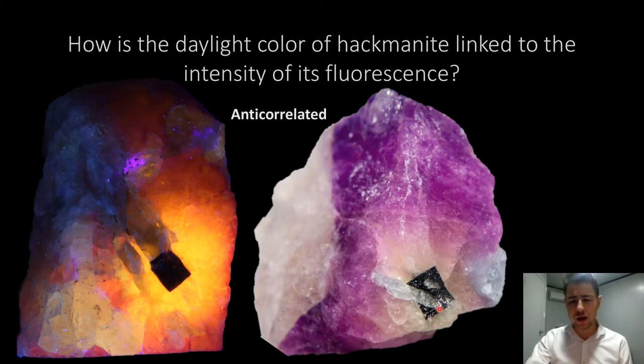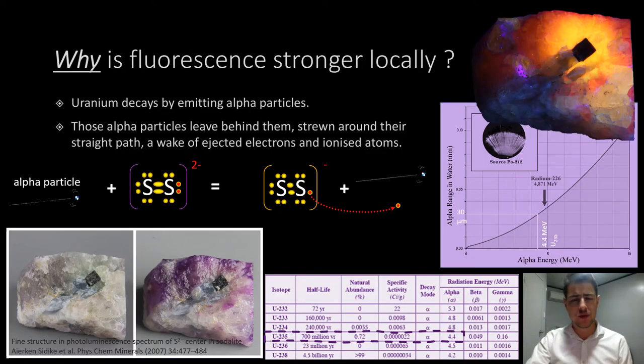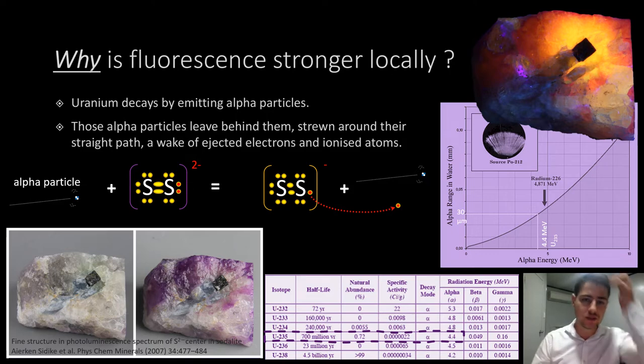Why is it white around that black spot? To answer that, we need to look at why the fluorescence is stronger locally. That uranium-thorium-bearing black phase decays, generating alpha particles. An alpha particle en route is like an atomic bulldozer, ripping away electrons from atoms it meets along its path. What happens when you ionize S22-? It becomes S2-, the fluorescent version of itself.